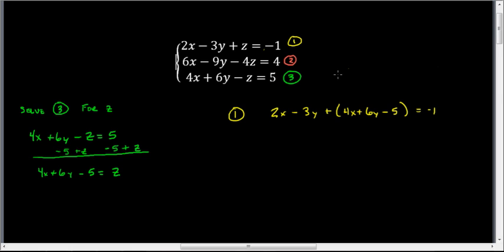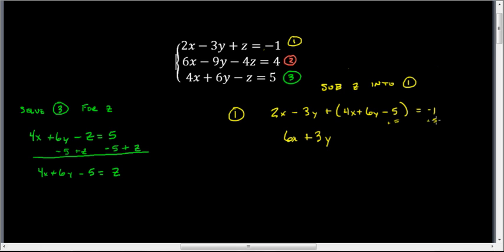Now I combine like terms. Taking 2x plus 4x gives 6x; negative 3y plus 6y gives positive 3y; and distributing the positive 1 over the negative 5 gives negative 5, which I add to both sides, leaving equals 4. So equation A is: 6x plus 3y equals 4.